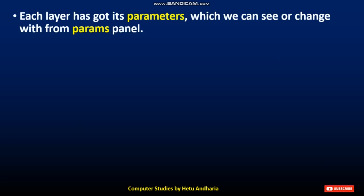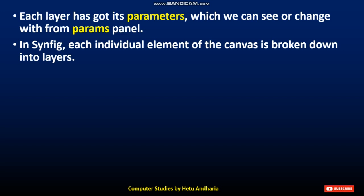Each layer has its own set of parameters. We can see the parameters of a layer by first selecting the layer from the layers panel and then looking into the params panel. The params panel is located on the left-hand side bottom part, just below the toolbox. From the params panel you can change parameters such as color and many other things. The name of this panel is the params panel.